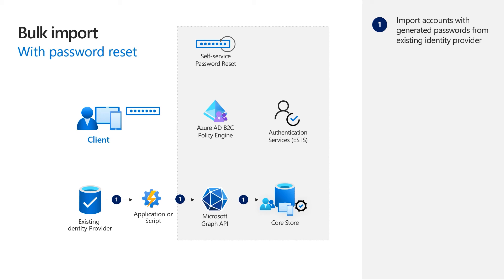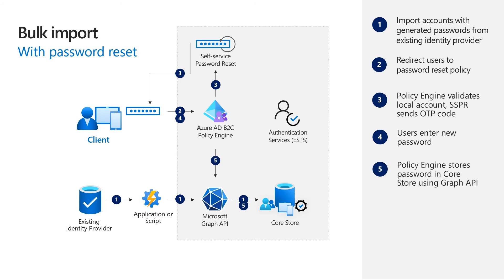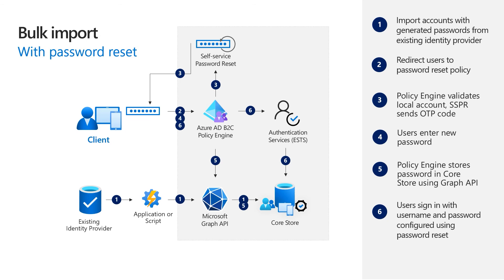In a similar way, your migration application reads user accounts from the existing identity provider, generates passwords this time, and creates corresponding accounts in the Azure AD B2C directory. Users are then redirected to the password reset policy. The policy engine validates the local account using an identifier such as email and leverages the self-service password reset service to send an OTP code. Once the OTP code is validated, users can enter a new password. The policy engine stores the new password in the core store using the Graph API. Once the password is configured, users can sign in with their local account as usual.